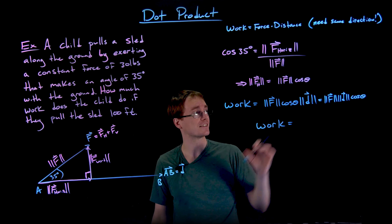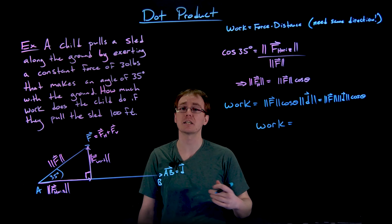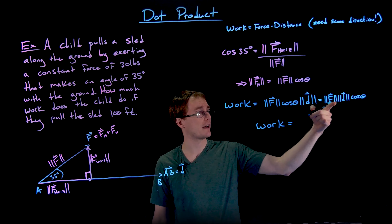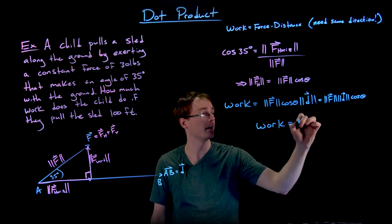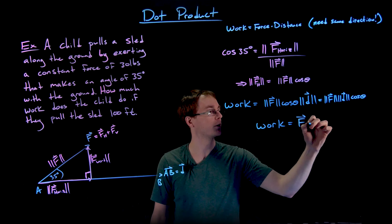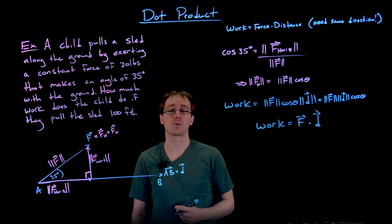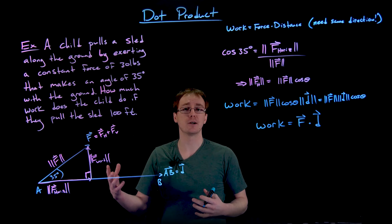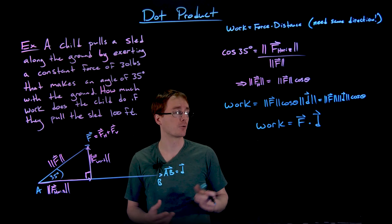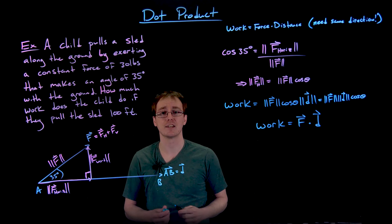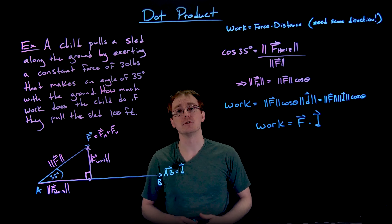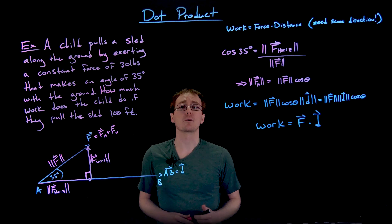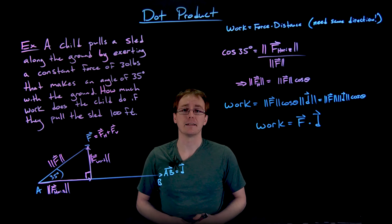We should recognize that the right-hand side is our trigonometric version of the dot product, so work equals |F| times |D| times cosine of theta. We can also write that as the dot product of our force vector F with our displacement vector D, which makes it easier to compute when we are given component information. These formulas will be really important for work problems throughout mathematics and science.